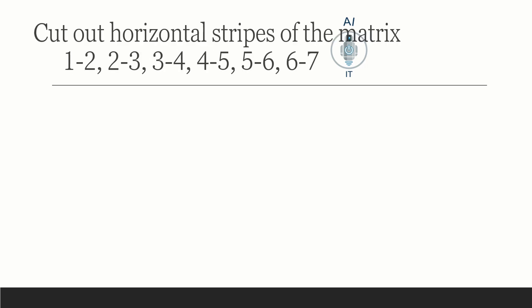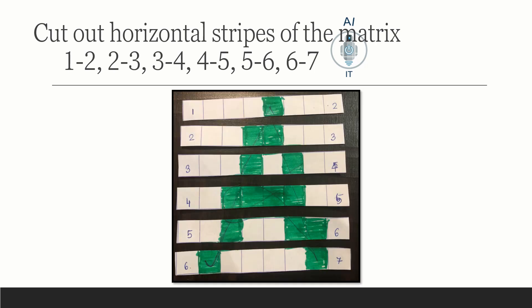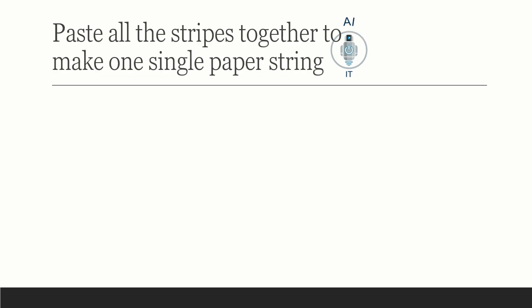After this is done, we can cut out horizontal stripes of the matrix like this: 1 to 2, 2 to 3, 3 to 4, 4 to 5, 5 to 6 and 6 to 7. Now let us paste all these stripes together to make one single paper string.